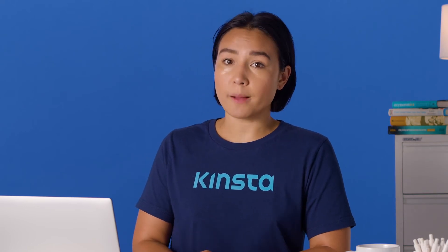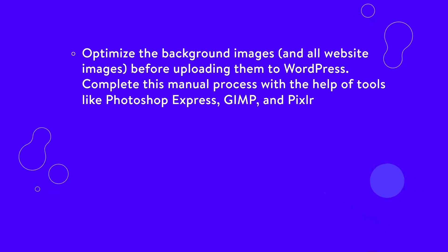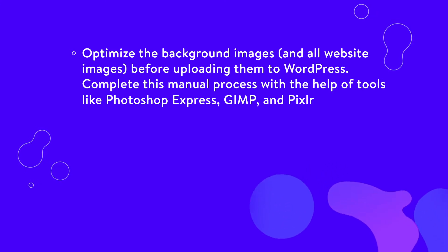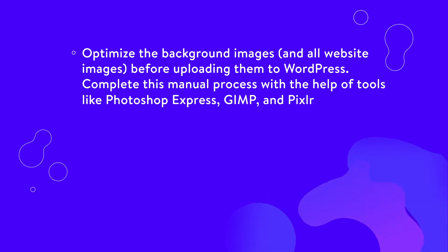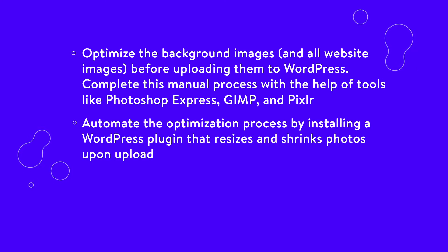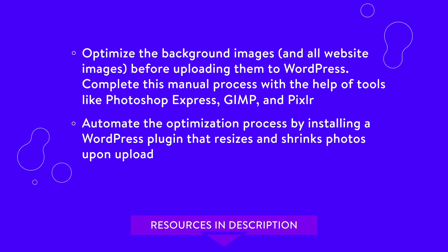You have two options for optimizing photos. First, optimize the background images and all website images before uploading them to WordPress — complete this manual process with the help of tools like Photoshop Express, GIMP, and Pixlr. Second, automate the optimization process by installing a WordPress plugin that resizes and shrinks photos upon upload.